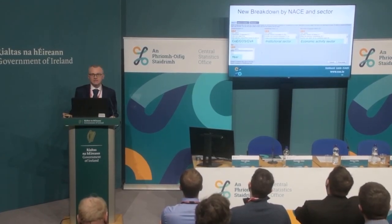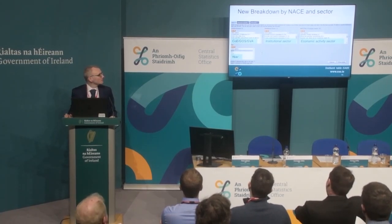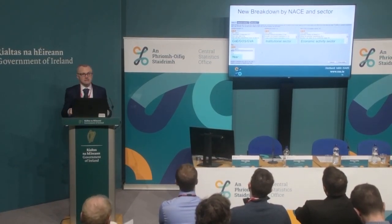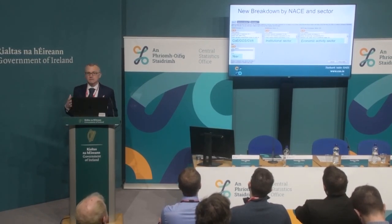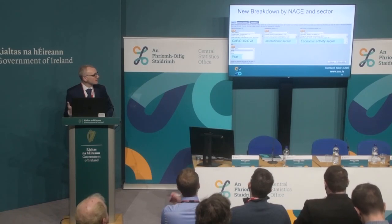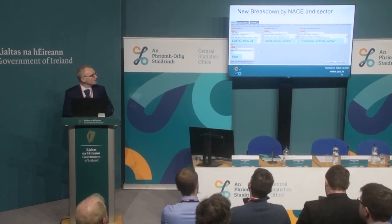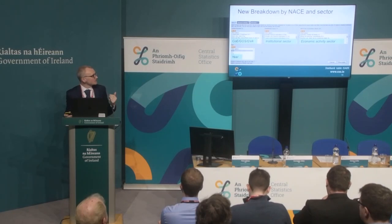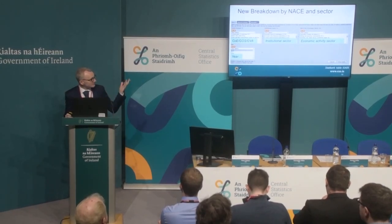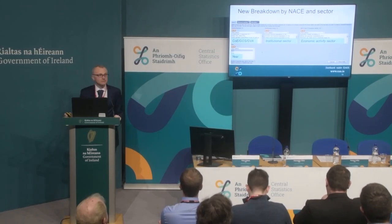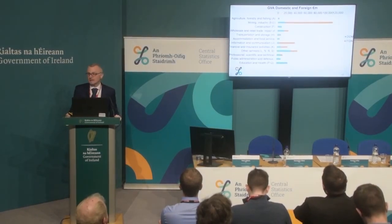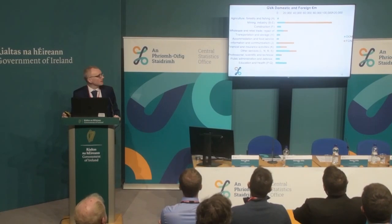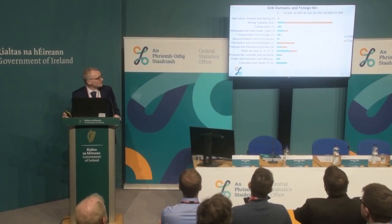In this year's accounts, we've also added a new table for the breakdown where we give pay, compensation of employees, profit, gross operating surplus, and gross value added divided into institutional sector. And then within each institutional sector, we've broken down into the NACE sector — the economic activity sector — so you get a much more detailed view of where these variables are coming from. This is StatBank table ISA05 if you want to have a look at it. The gross value added in the economy as a whole is completely dominated by gross value added in the industrial sector by foreign-owned multinationals.